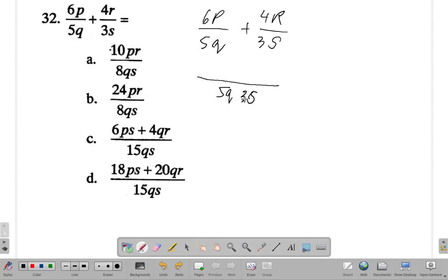5q into 5q times 3s goes 3s times. 3s times 6p is 18ps plus 3s into 5q times 3s is 5q. 5q times 4r is 20qr. So what does this give you?